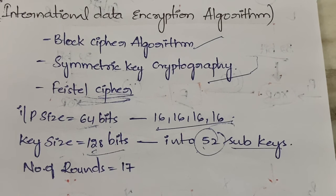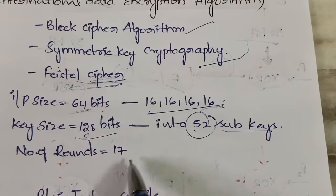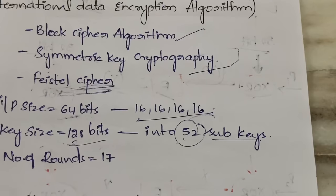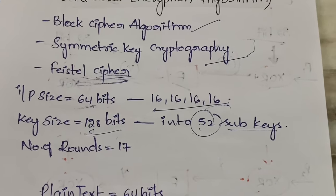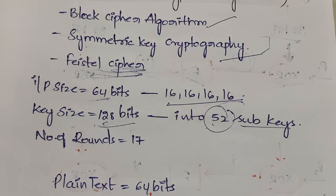Why 52 sub-keys? Because in total you have 17 rounds. The size of input is 64 bits, the size of the key is 128 bits, and the number of rounds is 17 in total. This is all about the basic specifications of the IDEA algorithm.